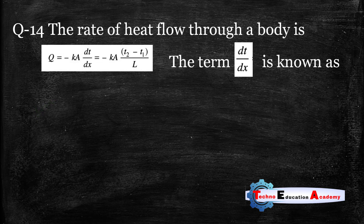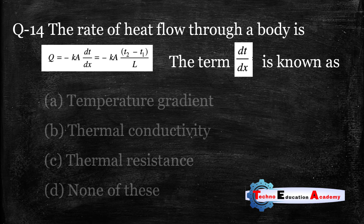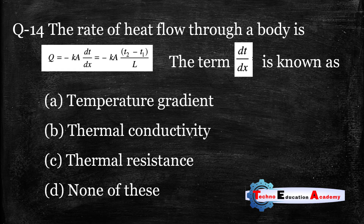Question number fourteen: the rate of heat flow through a body is Q = −kA·dT/dx, or equivalently Q = −kA·(T2 − T1)/L. The term dT/dx is known as the temperature gradient, so option A is the correct answer.